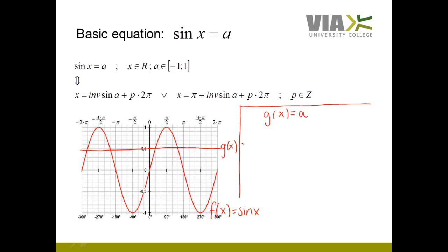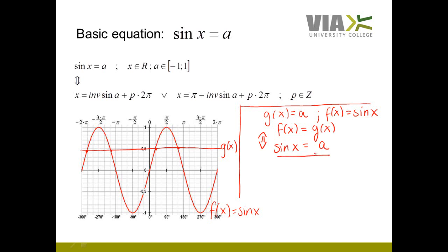If I find the specific intersection points between these two graphs f(x) and g(x) — as you may recall from the first semester when we discussed intersection points between two graphs — those would be the points which these two graphs have in common. So the intersection points occur when f(x) equals g(x), meaning the two y-coordinates must be the same. Since f(x) is defined as sin x and g(x) is defined as a, solving this equation gives exactly the intersection points between the two graphs.